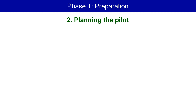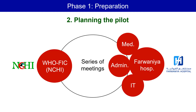The second step was planning the pilot. This was done through a series of meetings between our team from the National Center for Health Information and the team from Farwaniya Hospital. This included three types of personnel: the administration, because leadership commitment is crucial; the IT team, because ICD-11 is completely electronic; and representatives from the medical departments where the ICD-11 pilot will take place. The heads of departments were involved from day one. Through these meetings, explaining what we saw in the first step, how we want the pilot to proceed, and listening to their comments and recommendations, we in the end reached consensus.